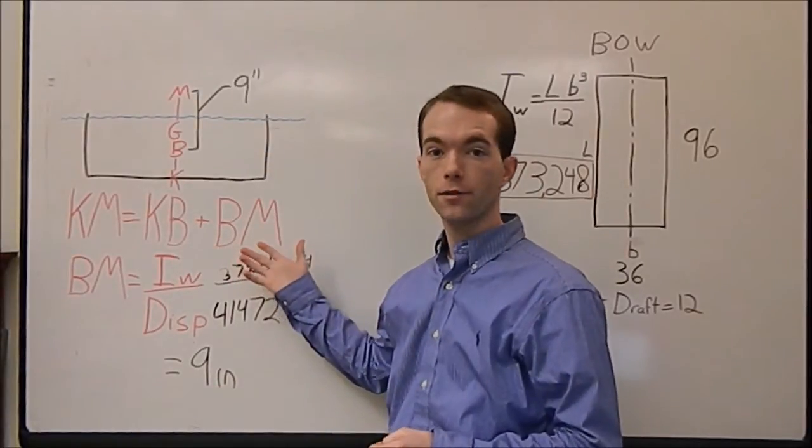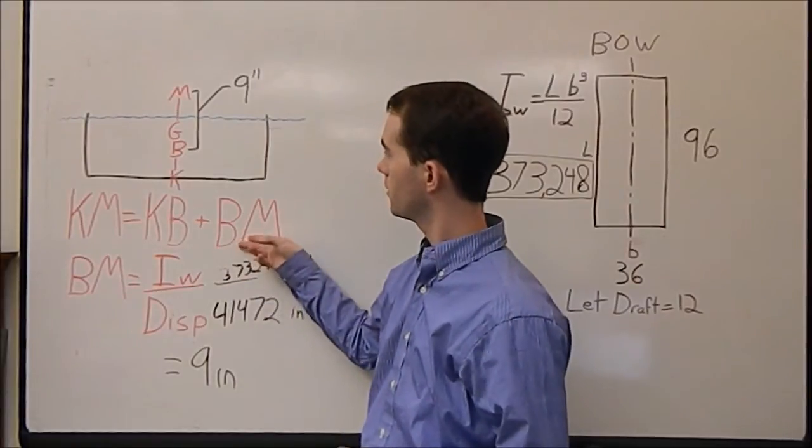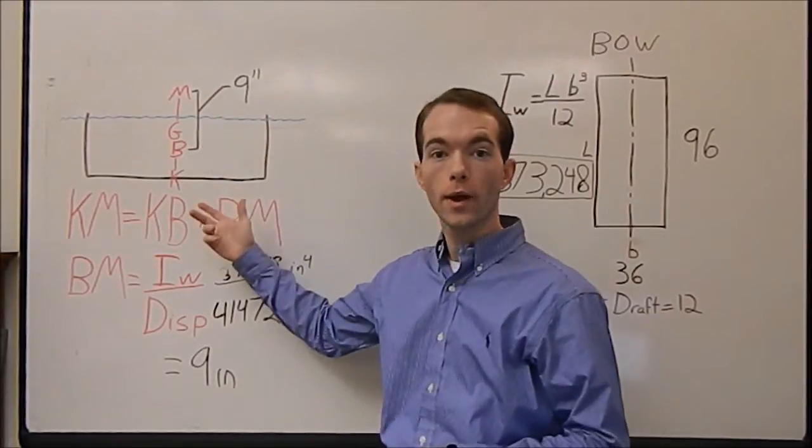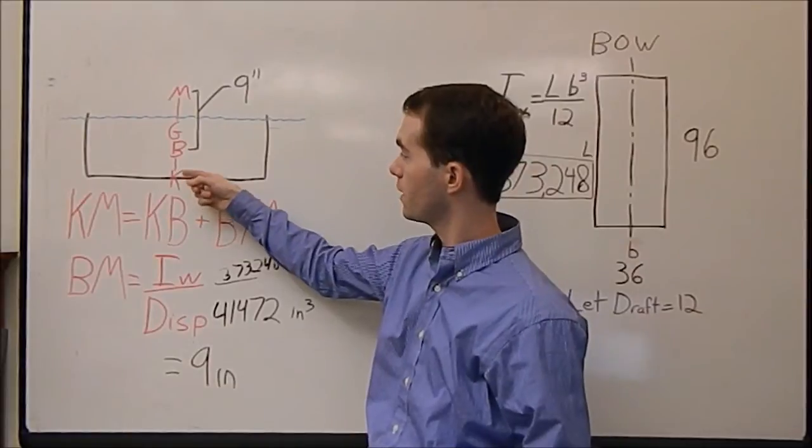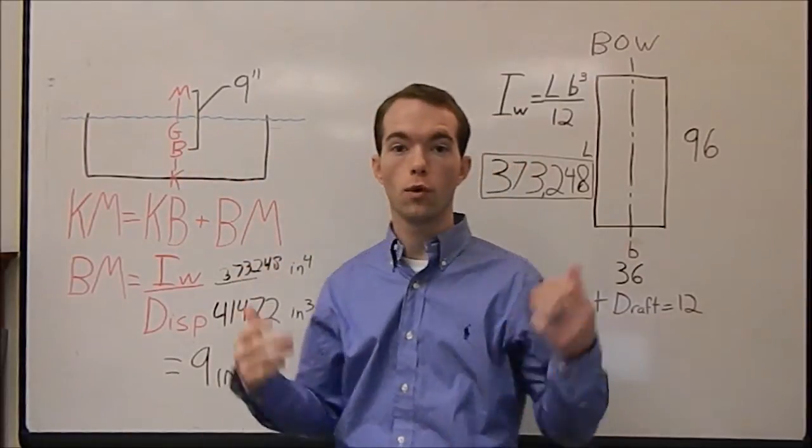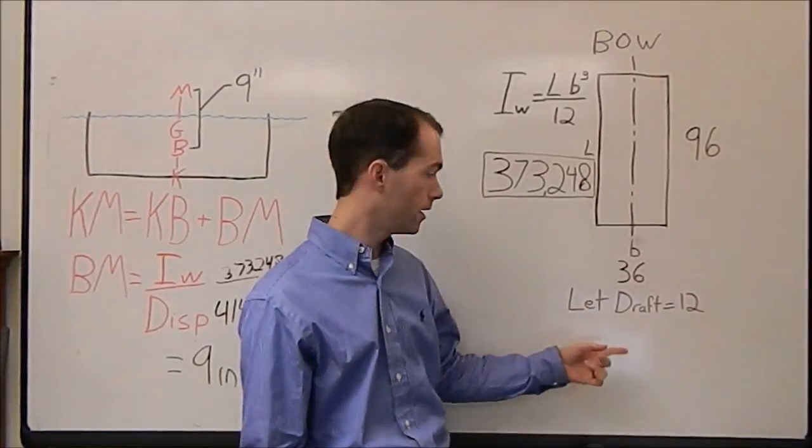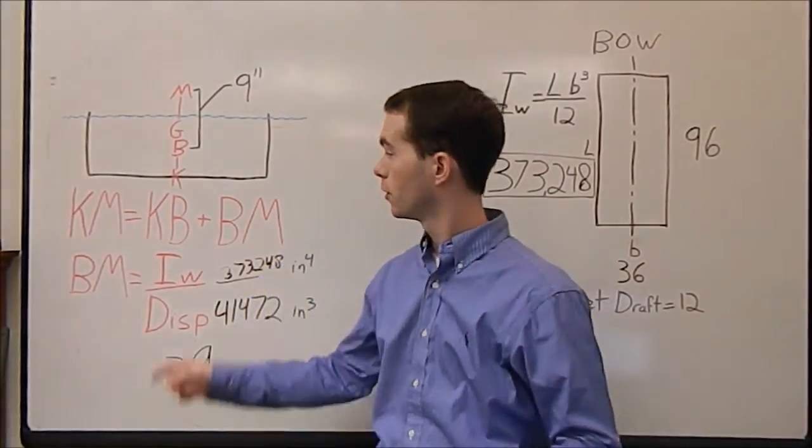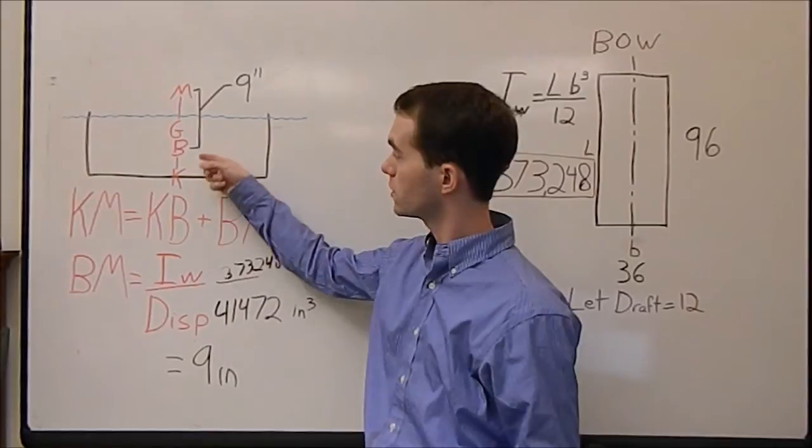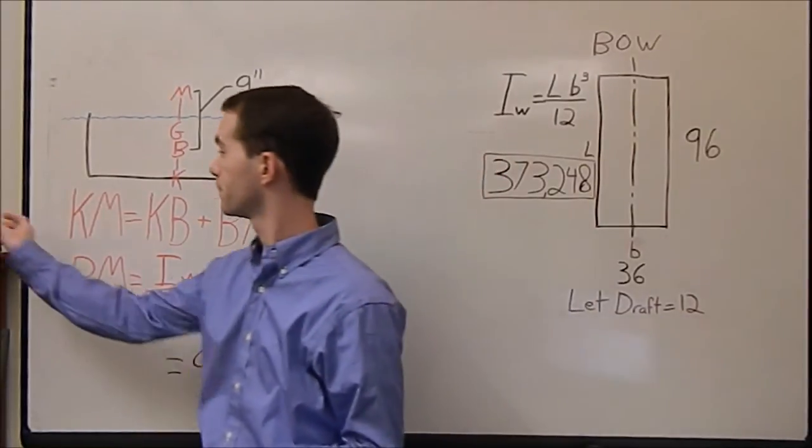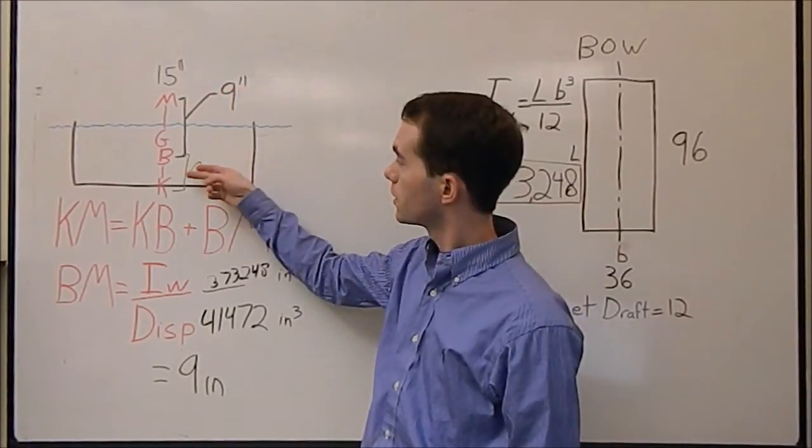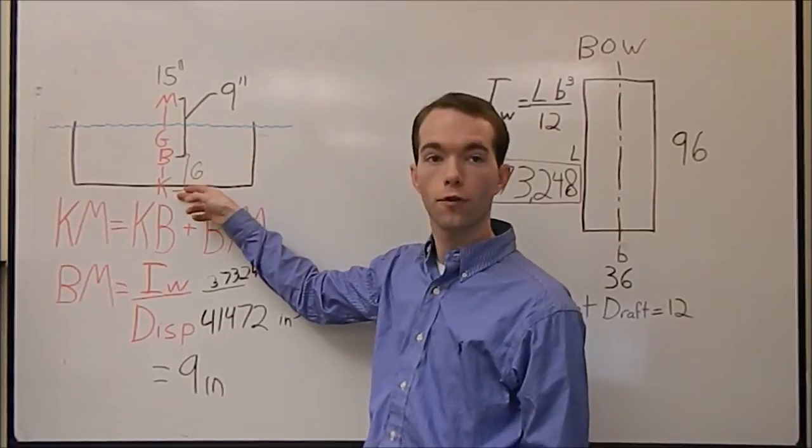We've got half the piece of our puzzle here. We've got the term for BM, which is there to here. Now, all we have to find is KB from the keel to the center of buoyancy. Well, since we've got a giant rectangular prism, the center of buoyancy is easy to find. It's simply half of our draft, which our draft is 12, so this distance here must be 6. So, we know that 15 inches is where our metacenter is from the keel.